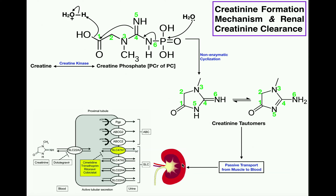Creatinine travels in the blood until it reaches the renal system — the kidneys. As shown in the schematic, creatinine is transported from the blood side into the proximal tubule of the nephron through the transporter SLC22A2. This is a form of antiportation, with creatinine coming in while protons are pumped out. Once in the proximal tubule, a variety of transporters move creatinine into the urine — three primary active transporters that use ATP directly, and secondary active transporters that antiport protons — resulting in active tubular secretion into the urine.